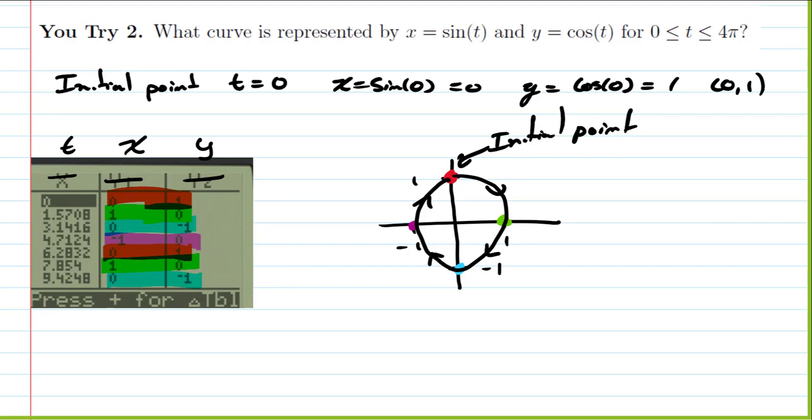So the difference is that x equals sine t, y equals cosine t gives a clockwise traversal, while x equals cosine t, y equals sine t gives counterclockwise. We went clockwise instead of counterclockwise.